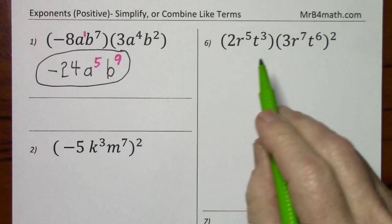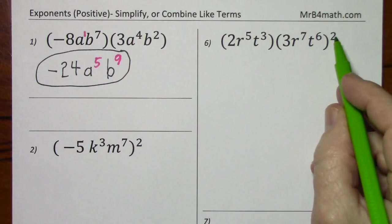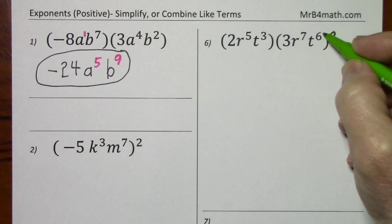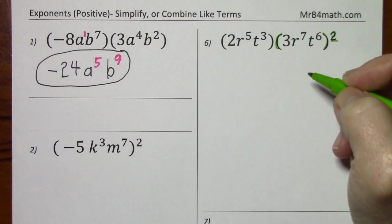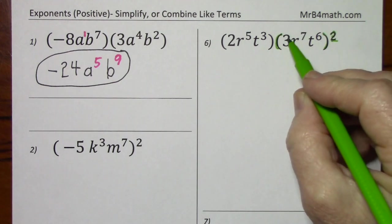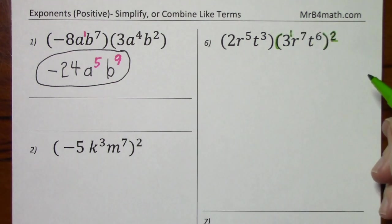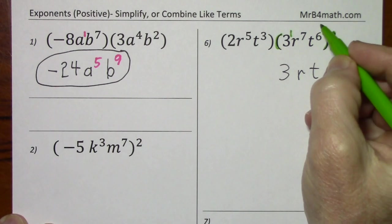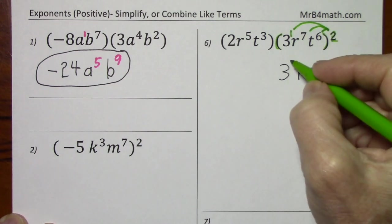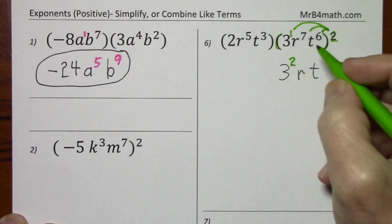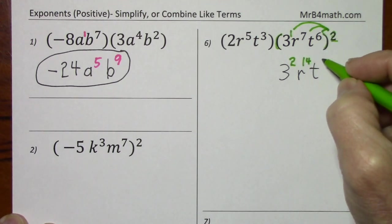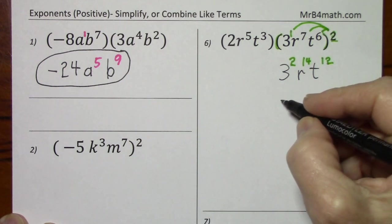Looking at number 6, again we have multiplication, but you need to be careful. This set of parenthesis is raised to the second power, so using the power rule, we'll have to multiply each exponent. Remember, that's 3 to the first power. So again, this 2 will multiply each exponent: 1 times 2, 7 times 2, and 6 times 2.